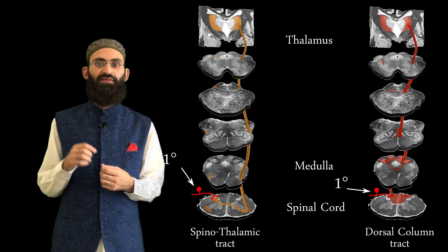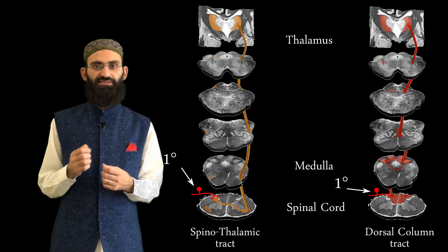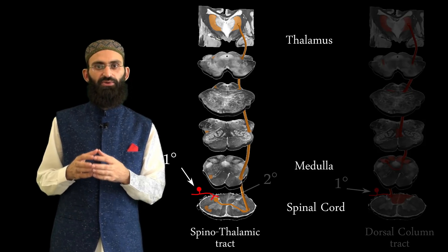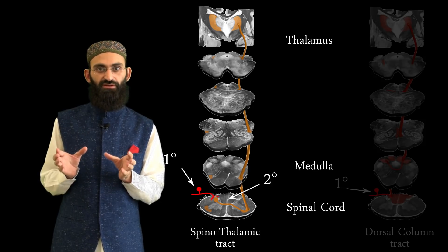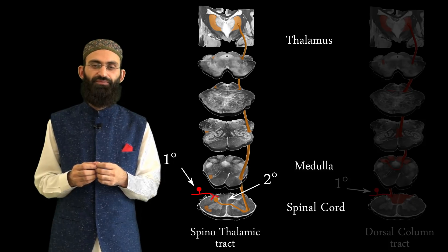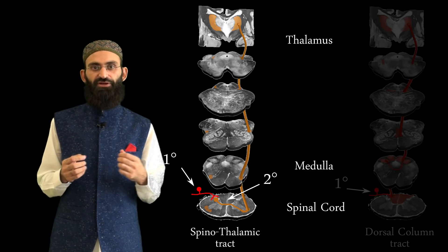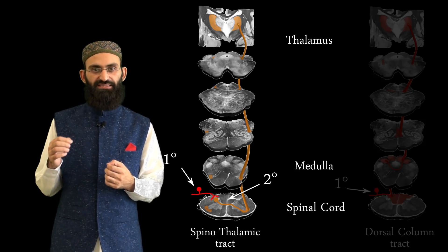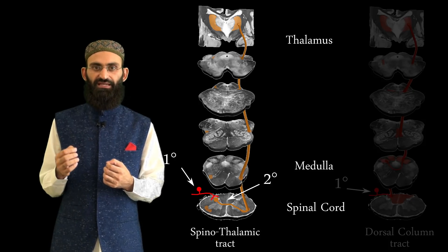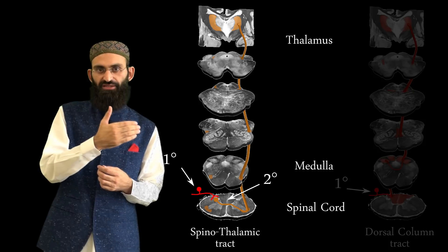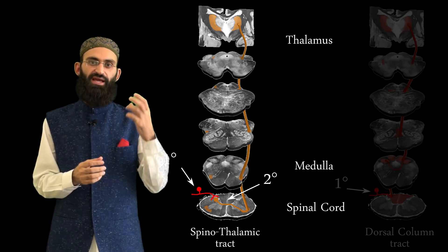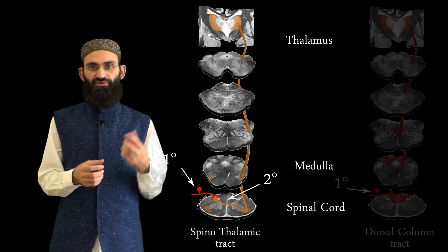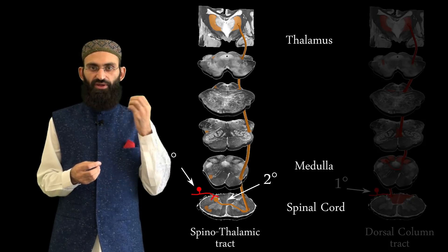The second rule is that second-order neurons always cross the midline. For the spinothalamic tract, second-order neurons are located in the dorsal horn of the spinal cord gray matter. First-order neurons synapse with these second-order neurons, whose axons ascend a few segments and then cross the midline to the other side, continuing as the lateral spinothalamic tract. Third-order neurons of this spinothalamic tract are located in the thalamus.